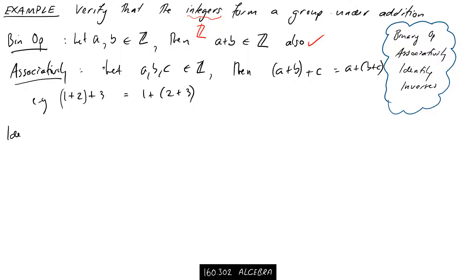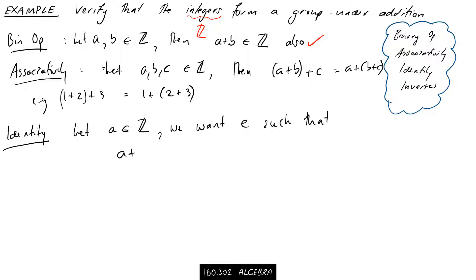Identity. This one's a little trickier but not that tricky. We're looking for a number E such that for any integer A, A plus E equals A and E plus A equals A. What's the only integer that when you add it to a number gives the same number back again? It's zero. So only E equals zero works. We've satisfied the requirement — for our integers under addition, the identity is zero.